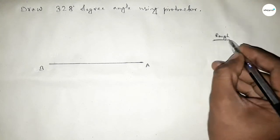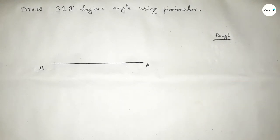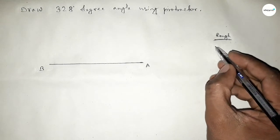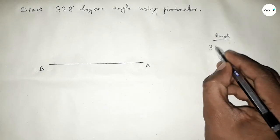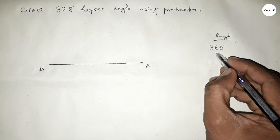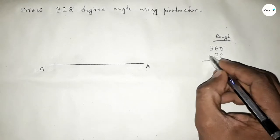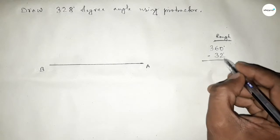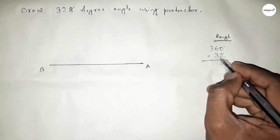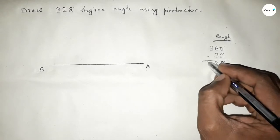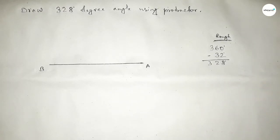If we subtract 32 degree angle from 360 degrees, then we can get 328 degree angle. So subtracting 32 degree angle: 360 minus 32 equals 328 degree angle.